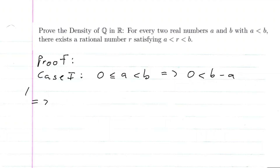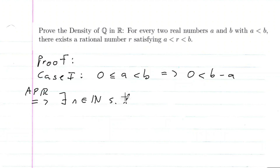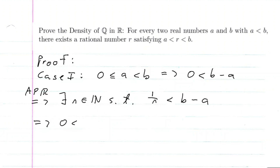From the Archimedean principle of real numbers, I know if I have a real number bigger than zero, then there exists an n contained in the natural numbers such that 1/n < b - a. And I know for any n contained in the natural numbers, 1/n is going to be bigger than zero, so I'll have this nice inequality here.